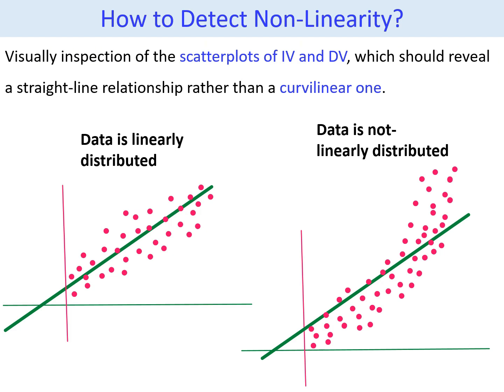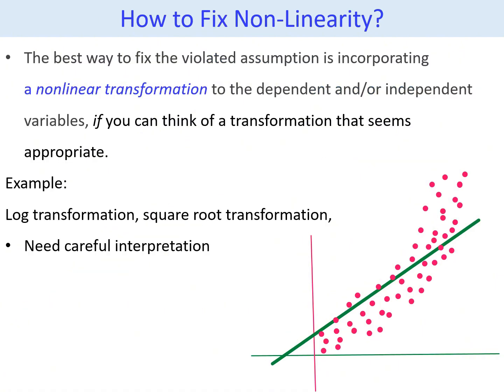But in the second case, the pattern of the data doesn't follow the linear relationship. Hence, we have to fix the problem of non-linearity before moving to further analysis. The best way to fix the violated assumption is incorporating a non-linear transformation to the dependent and/or independent variables. You may use different transformations as per the shape or pattern of the observed data — for example, log transformation or square root transformation. When using transformation, we have to be very careful in interpreting the results, because we first have to reverse the transformation before interpreting, as it is not possible to interpret transformed data results directly without back-transformation.